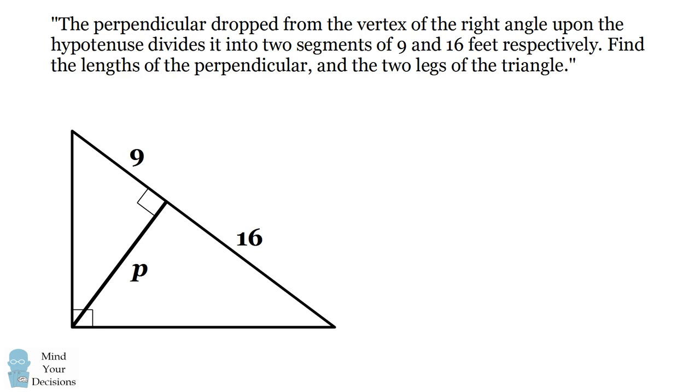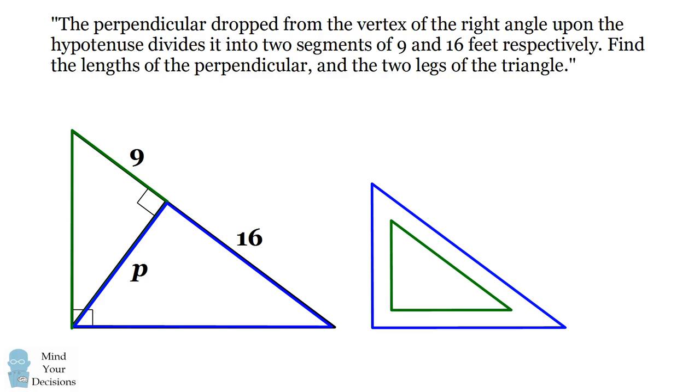The perpendicular to the hypotenuse of a right triangle creates a special set of triangles. The green triangle here and the blue triangle here are similar triangles. This means the ratio of their lengths and angles are the same. In particular the length of the shorter leg of the green triangle to its longer leg will be the same ratio as the length of the shorter leg of the blue triangle to its longer leg.